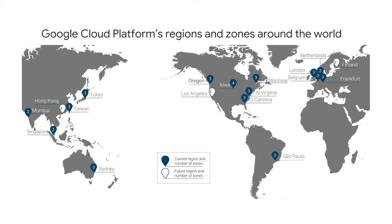As of the time of this video's production, GCP had 15 regions. Visit cloud.google.com to see what the total is up to today.